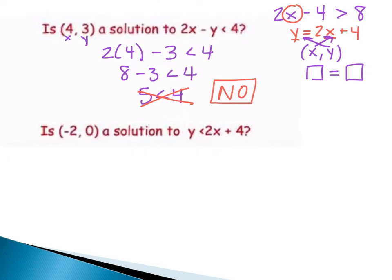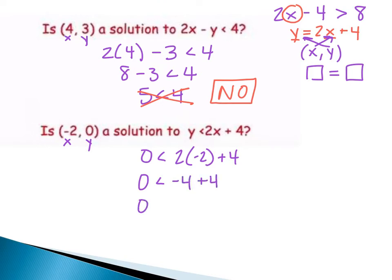Next: is the point (-2, 0) a solution to y is less than 2x plus 4? This is x, this is y. I'm going to plug them in: 0 is less than 2 times negative 2 plus 4. So 2 times negative 2 is negative 4, plus 4. Negative 4 plus 4 is 0. Is 0 less than 0? No. This is also not true, so this one is also not a solution.